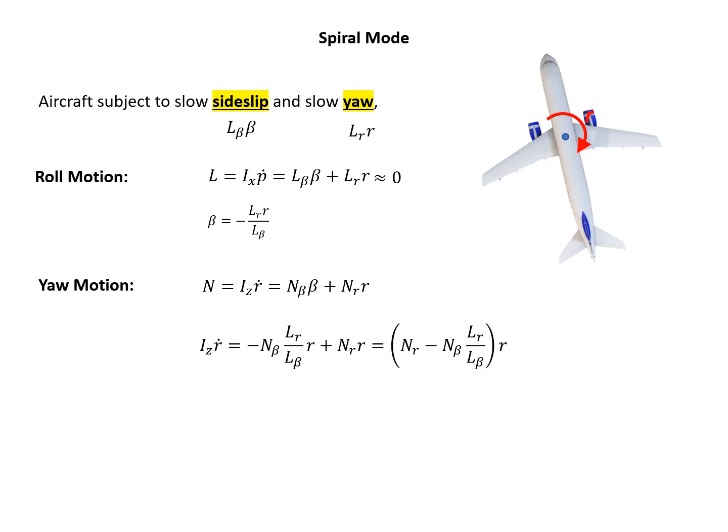Again, assume the solution has this form, r equals A e to the power of lambda t. We have the acceleration of r equals lambda r. We just plug in the r dot, so we have Iz times lambda r equals the right hand side. That's the governing equation from the yaw motion. If we write down the lambda explicitly, it's slightly more complicated. As long as we know all these components on the right hand side of lambda, we can know r, the solution for r.